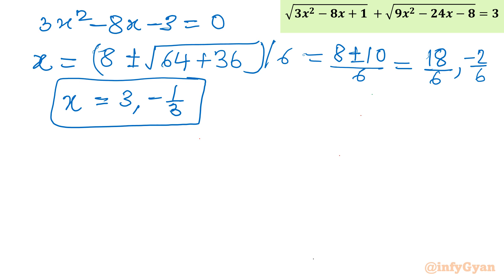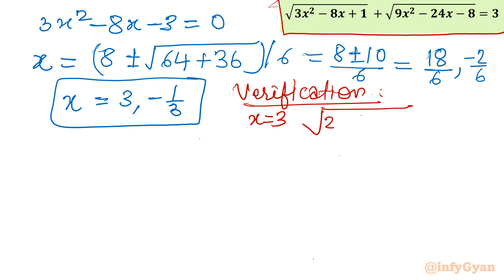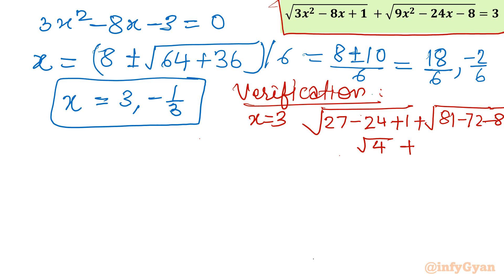Let us verify both values. For x = 3: square root of (3·9 - 24 + 1) plus square root of (9·9 - 72 - 8) = square root of (27 - 24 + 1) + square root of (81 - 72 - 8) = square root of 4 + square root of 1 = 2 + 1 = 3. This value is confirmed true.